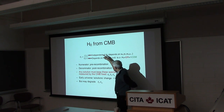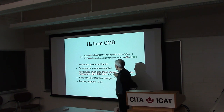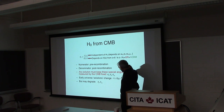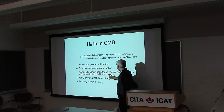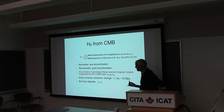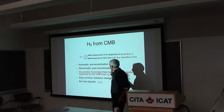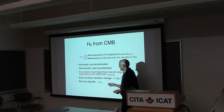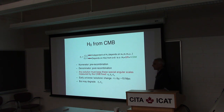Any resolution that tries to change the estimated H0 must contend not just with the sound horizon, but also the damping scale and the matter-radiation equality scale estimated from the same data. When you add some mix — like a new relativistic species or a new phase of dark energy — you're going to mess with possibly all of these numbers and degrade the fit to the CMB data.